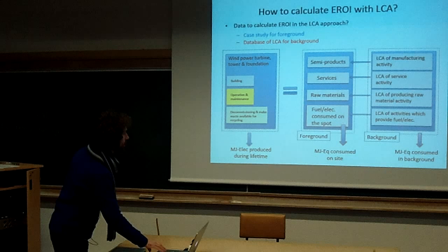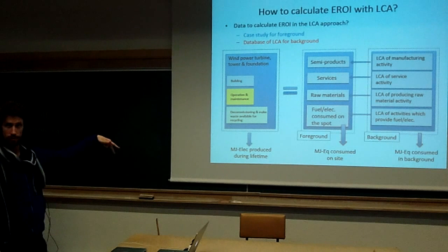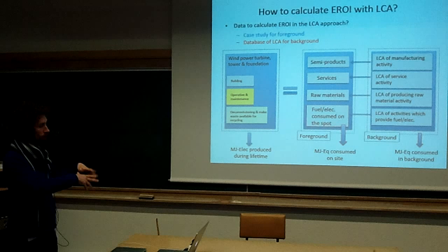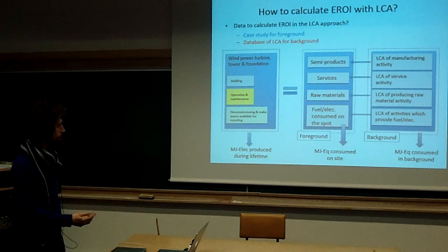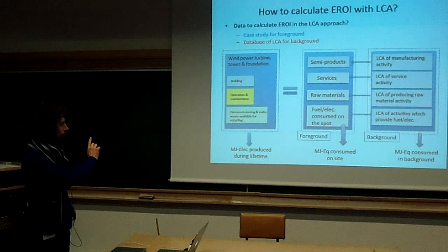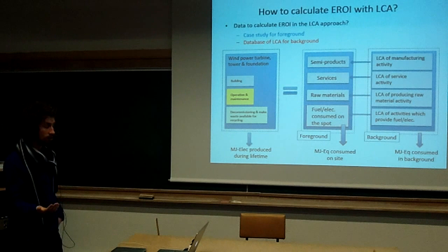How is this done? Basically, the method is: we use a case study for the foreground to determine semi-products, services, raw materials, fuel, and electricity consumed on-site. We link these results with previous life cycle assessment results or data we can find in the literature or in databases such as ecoinvent. Thanks to this methodology, we can calculate megajoules electric produced during all the lifetime, energy consumed as primary energy on-site, and energy consumed in the background. And we can calculate an EROI.